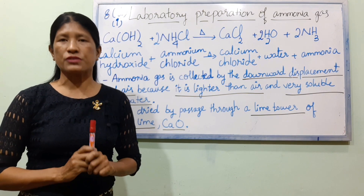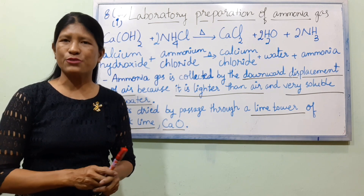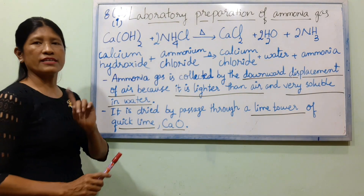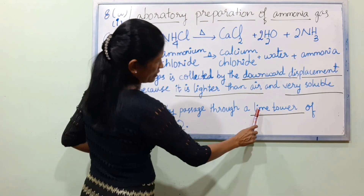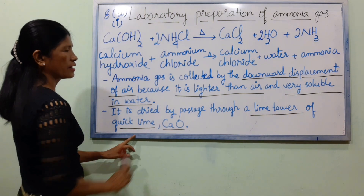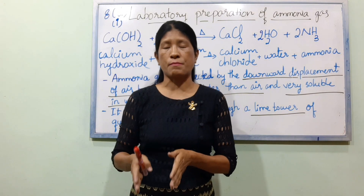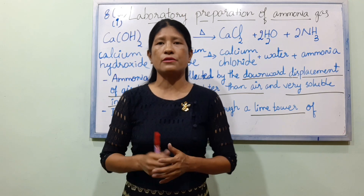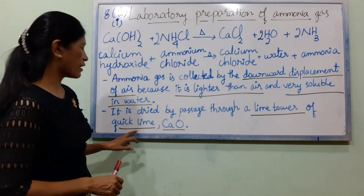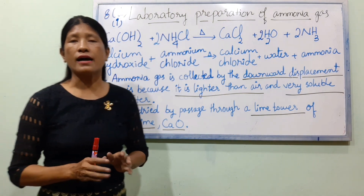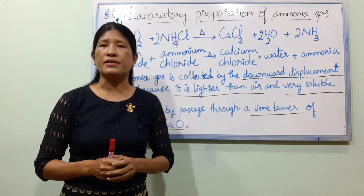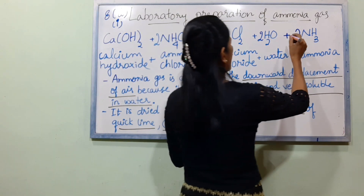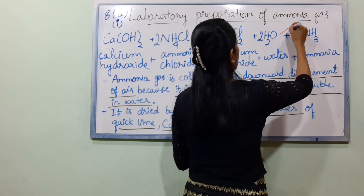If you are not collecting it over water, the water is collected by the water. It is dried by passing it through a tower of quicklime CaO. Among the important things to know is that ammonia is not enough to be used in air. We are going to use the ammonia in the air.